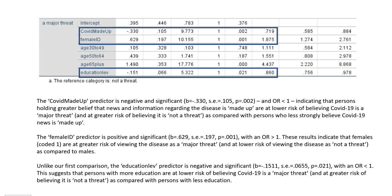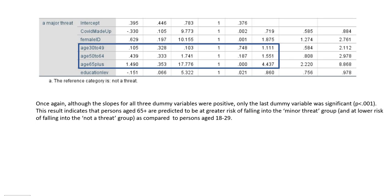With respect to the education level predictor, it is negative and significant. Previously it was positive and significant when predicting minor threat versus no threat, but here it's a negative and significant predictor, suggesting persons with more education are at lower risk of believing COVID-19 is a major threat compared with persons with less education. Although the slopes for all three age dummy variables were positive, only the last dummy variable was significant, indicating persons aged 65 plus are at greater risk of falling into the major threat group compared to persons aged 18 to 29.